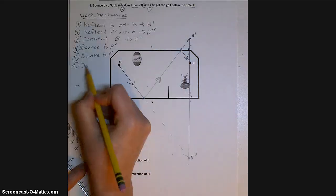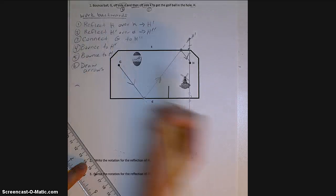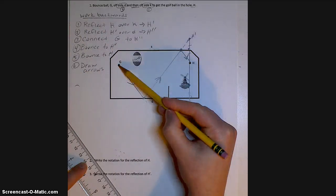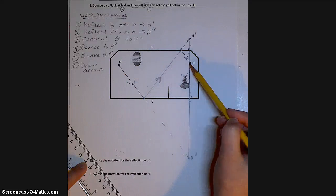So if you did not already, make sure you always remember to draw your arrows to show the path of the golf ball. And that's always going to be starting from G going to H.